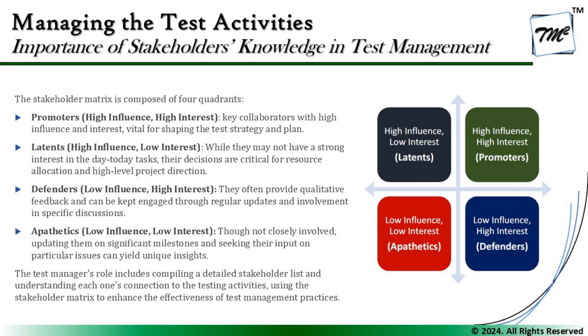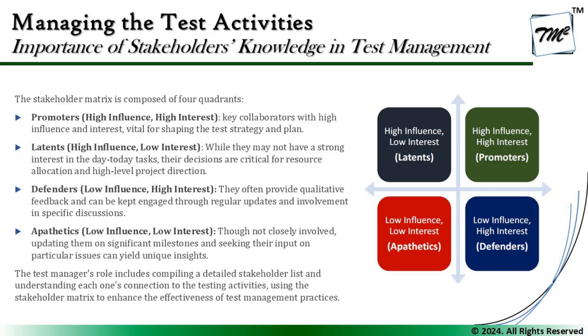Let's deep dive into what the stakeholder matrix means to us and the different partitions within it. We are categorizing stakeholders into four quadrants called Promoters, Latents, Defenders, and Apathetics. Let's understand who these four quadrants represent, what they contribute, and how we can relate this to the real world.